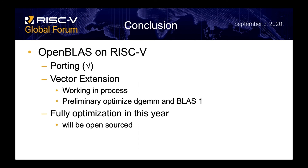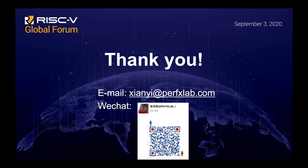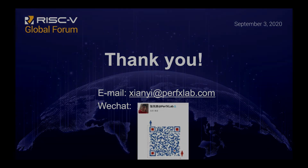In conclusion, OpenBLAS now supports RISC-V. The porting is finished, but the vector extension is a work in progress. We optimized the DGEMM function and BLAS Level 1 functions. The full optimization will be finished this year and will be open sourced. Thank you for your attention. This is my email and WeChat QR code.